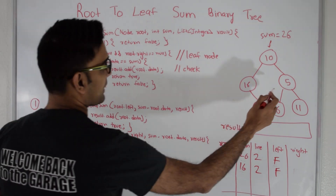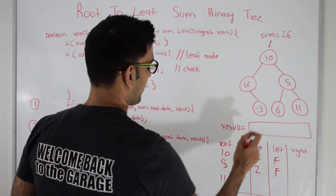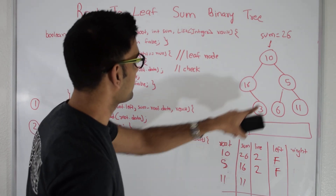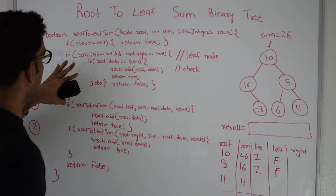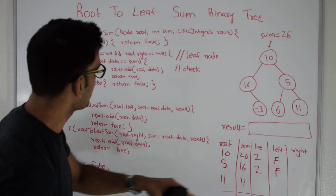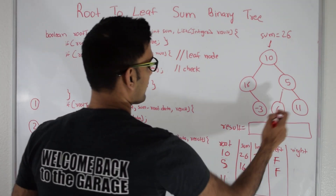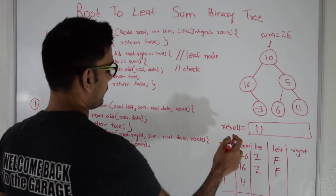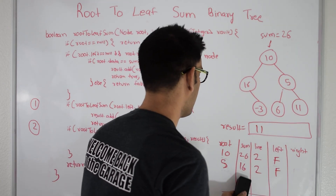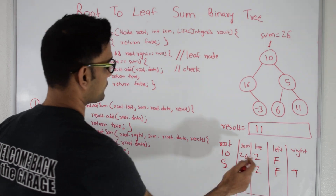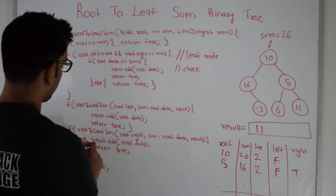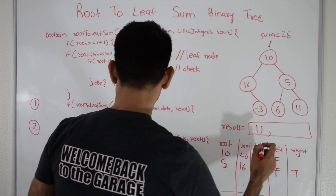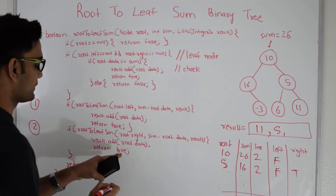Node 5 then goes to its right side from line 2. The new root is node 11, and it passes 16 minus 5 equals 11. Root is 11, not null, and it is a leaf. Root data 11 equals sum 11, so we add 11 to the result list and return true. Node 11 returns true to node 5. Node 5 gets true from its right side, so it adds itself — value 5 — into the result and returns true to the calling function.